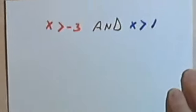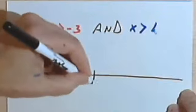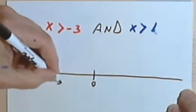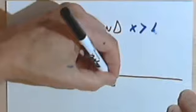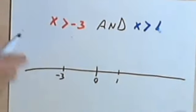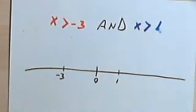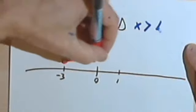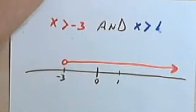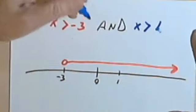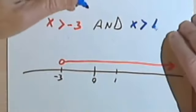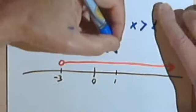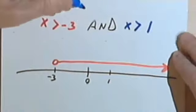Okay, the number line. 0, negative 3, and 1. So let's see, x is greater than negative 3, that's going to be this. x is greater than 1. Okay.